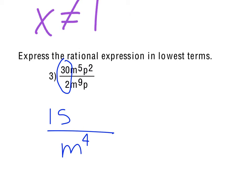And if you notice the p's, 2 and then just a 1 there really. So the p's end up on top, and just a single p to the 1st power there. So 15p over m to the 4th would be what we're looking at there.